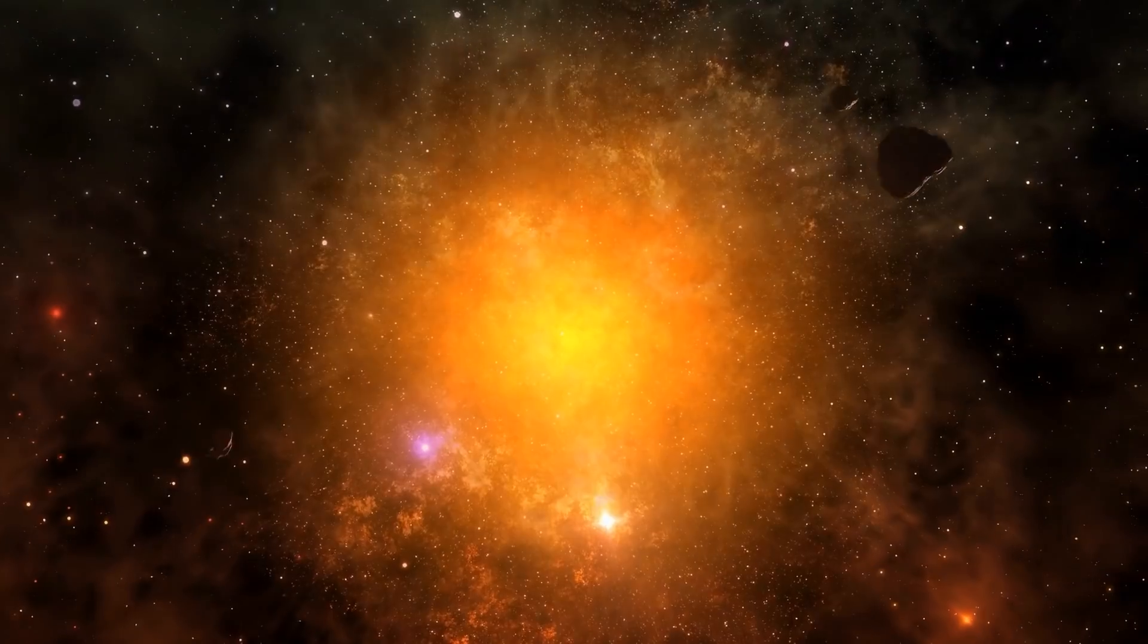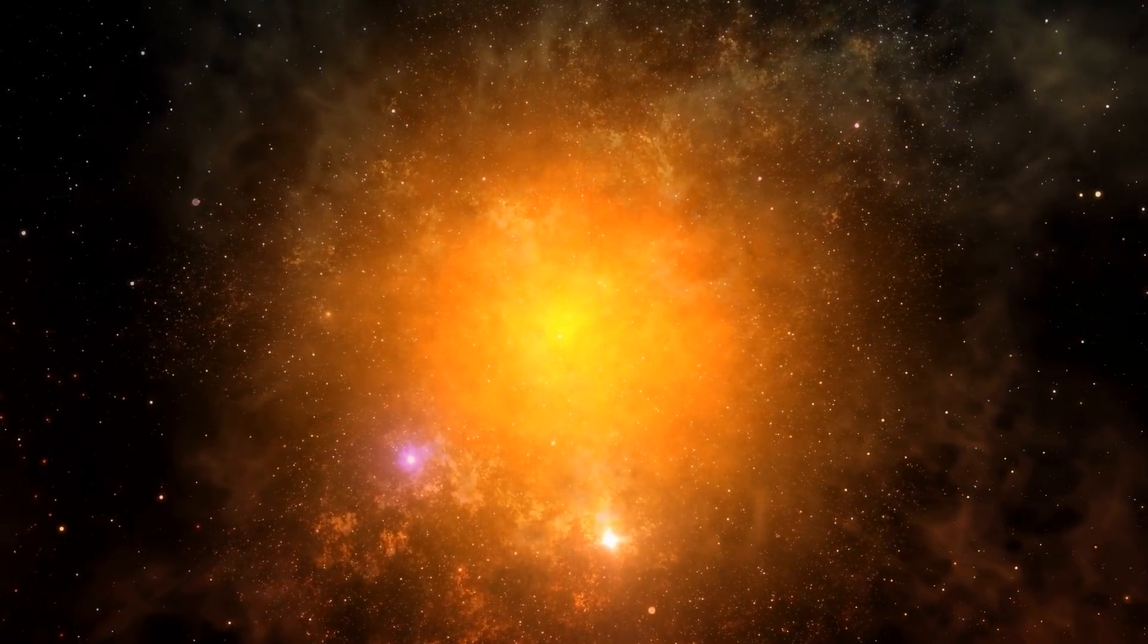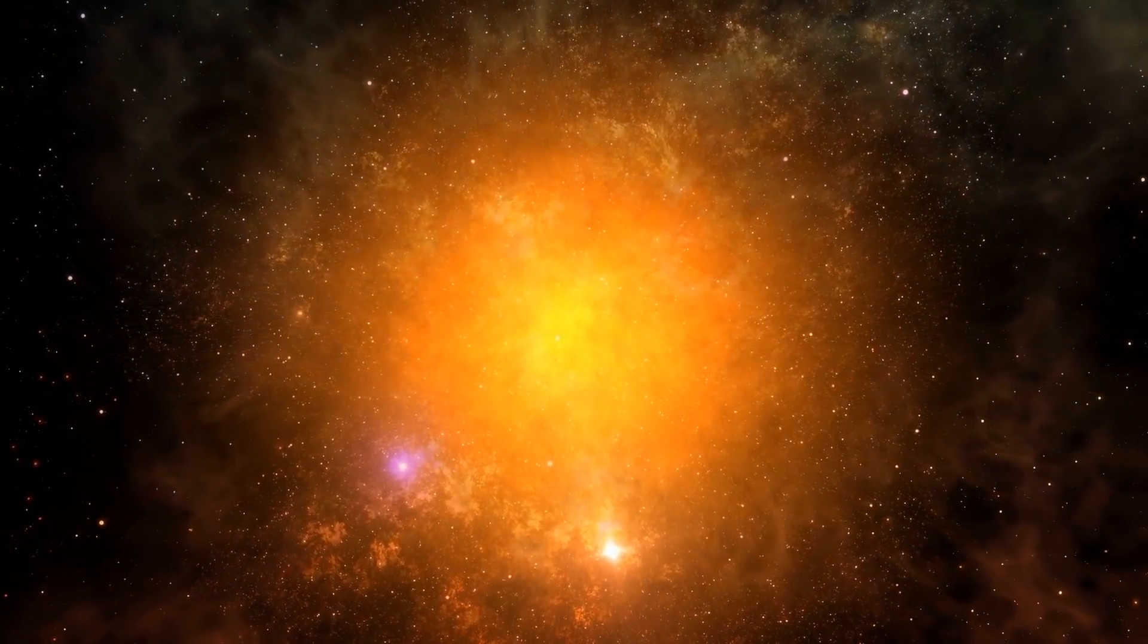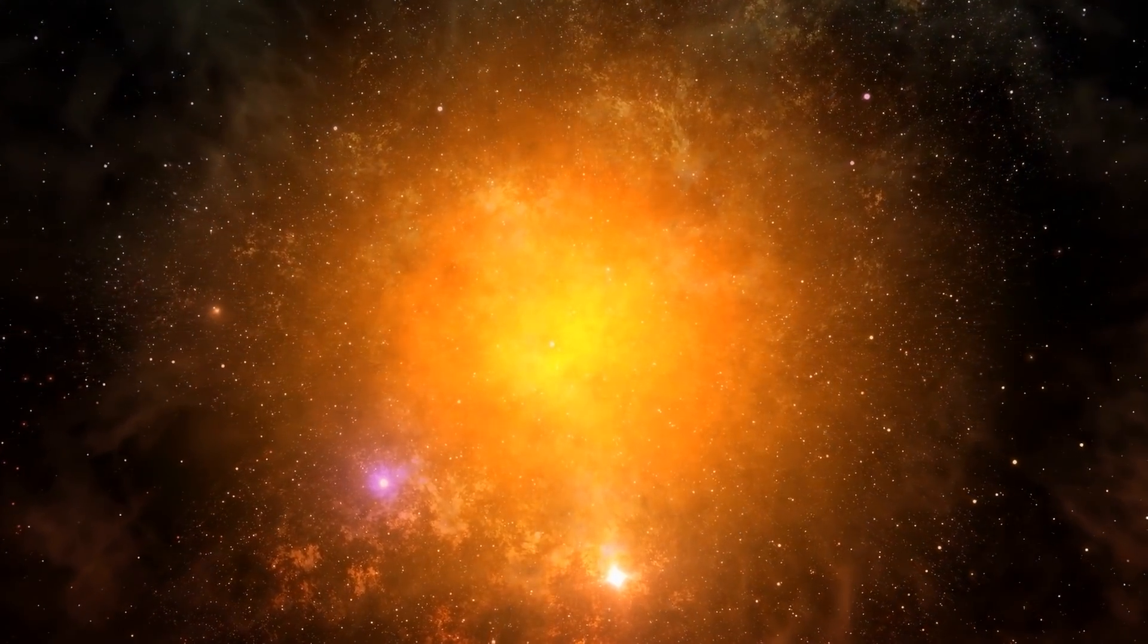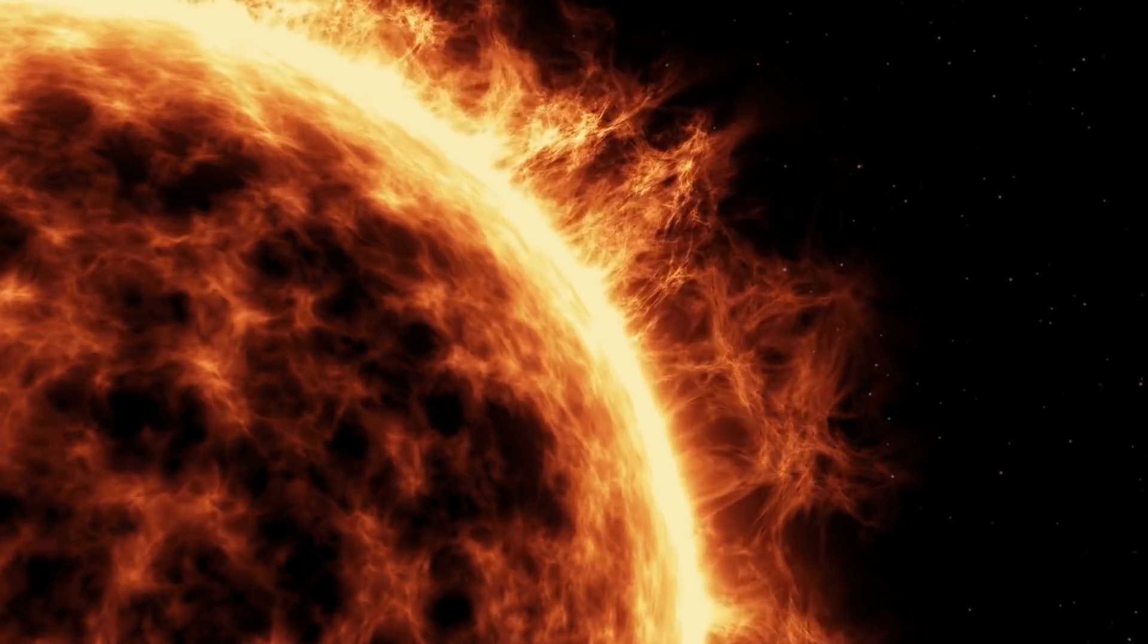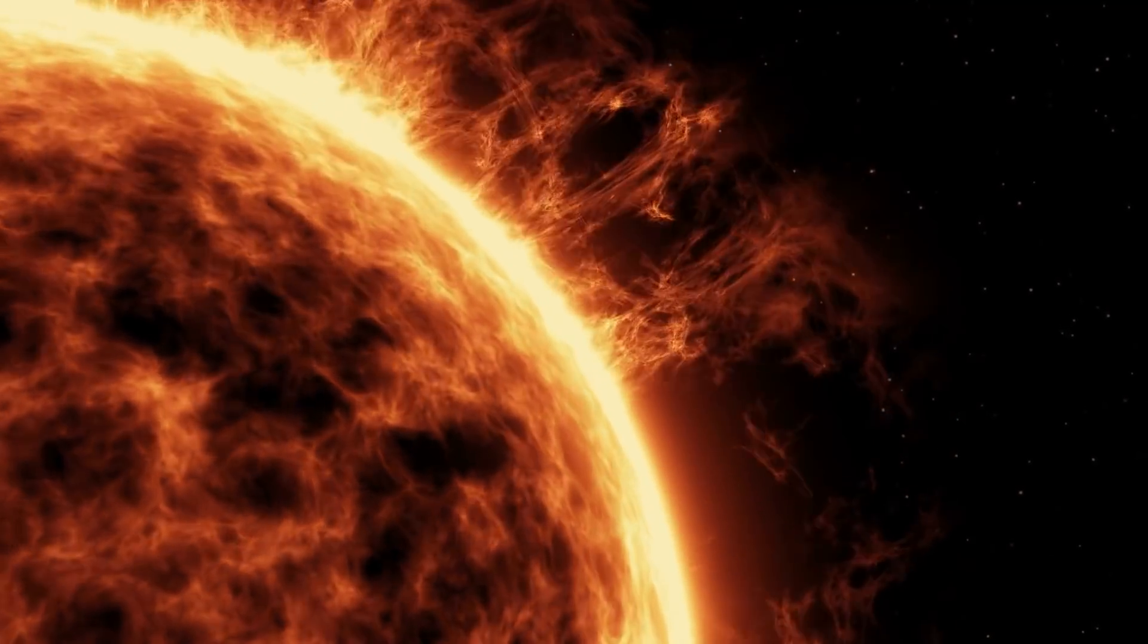Scientists believe that this is indeed how Earth came to be. Approximately 4.6 billion years ago, our solar system was nothing but a cloud of dust and gas, which we can now assume was the result of a supernova. Over time, the weight of its gravity caused the material to collapse in on itself, forming our sun in the centre.